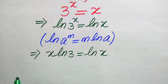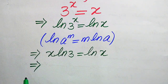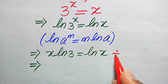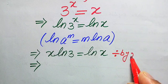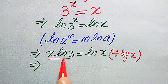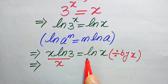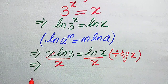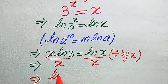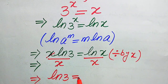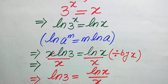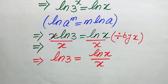In the next step, we move all variable terms from the left-hand side to the right-hand side. We divide both sides by X. This X cancels with this X, and we get log(3) = log(X)/X.